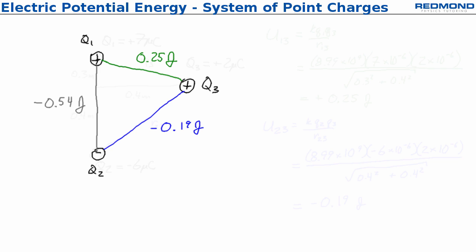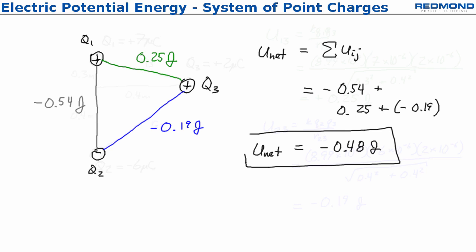In order to find the total electric potential energy of the system of point charges, I need to find the total or the net, which is really just the sum of the individual electric potential energies. When I have three point charges, I need to add all three of these interactions. We have -0.54 between q1 and q2, then when I added q3, I have to add 0.25 and -0.19. So the net potential energy of this system of three point charges equals -0.48 joules. And that's it for this system of three point charges.